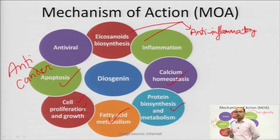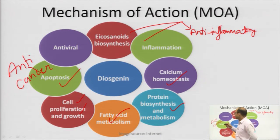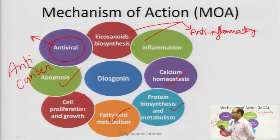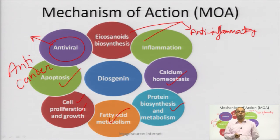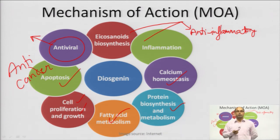Because diosgenin is involved in protein synthesis regulation, it also shows antiviral activity, since viral replication involves proteins. In summary, its various activities include anti-inflammatory action, calcium homeostasis management, protein biosynthesis and metabolism, fatty acid metabolism, cell proliferation and growth, and use as an anti-cancer and antiviral drug.